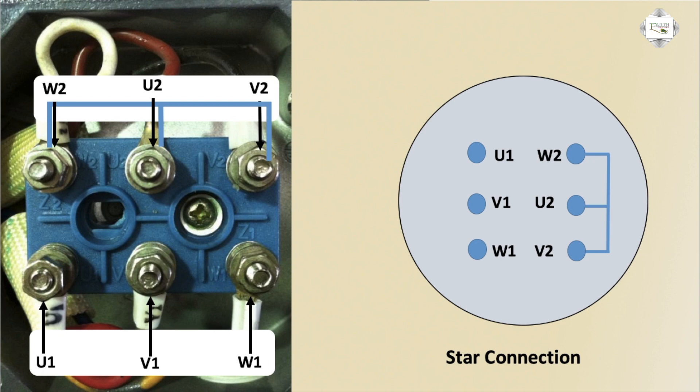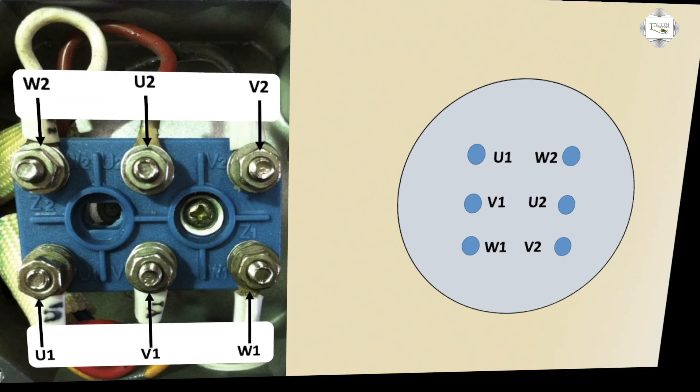U1 is red, V1 is yellow, and W1 is blue. Supply connection and secondary side, we just short the connection. This is a Star.